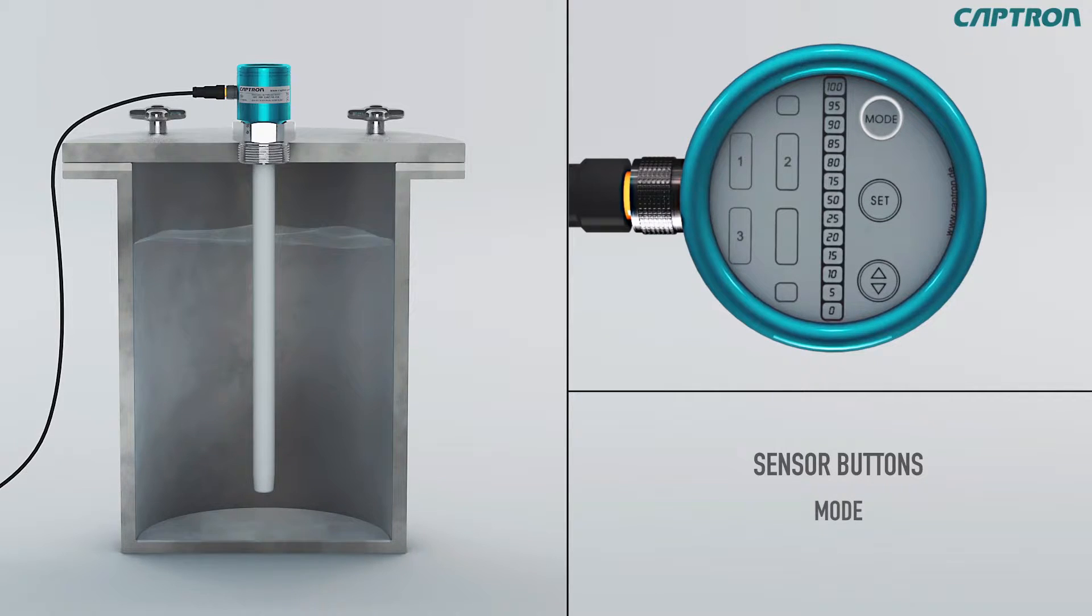The mode button, with which you can reach the next set point without overwriting already saved settings. The set button, with which you reach the next set point and save the current settings. And the up down button, with which you can set values and functions.